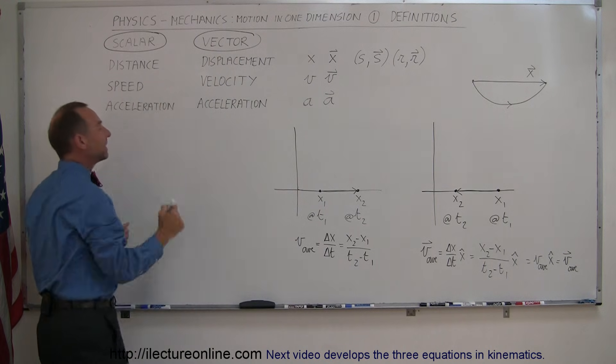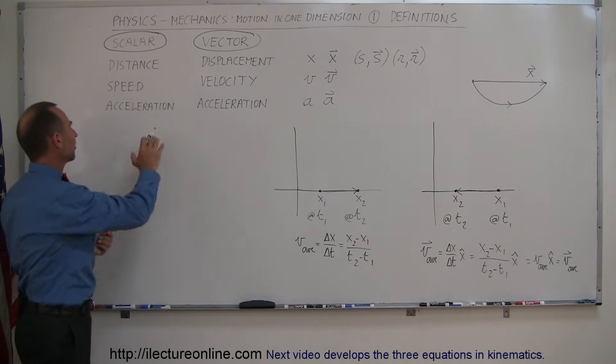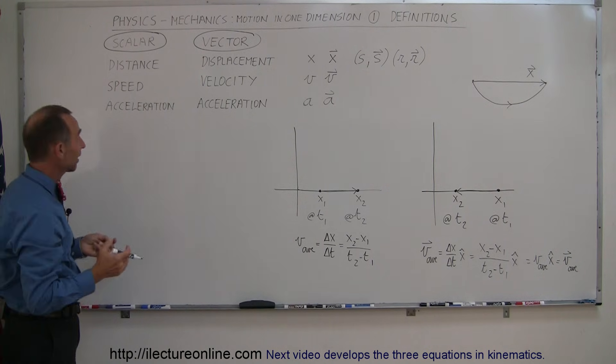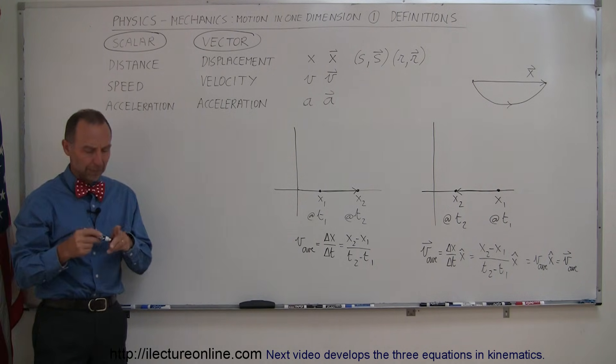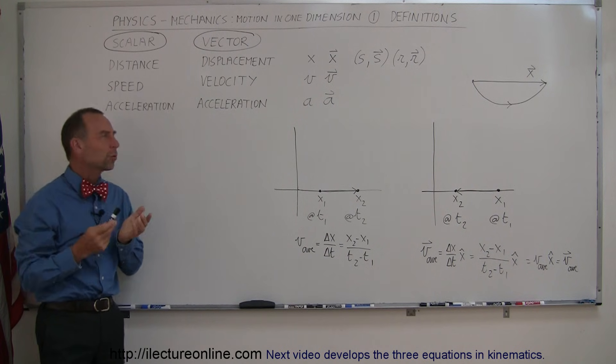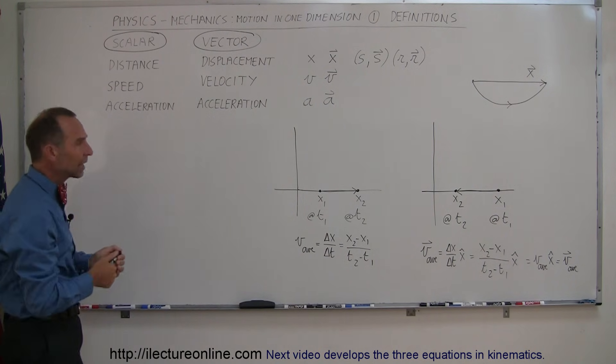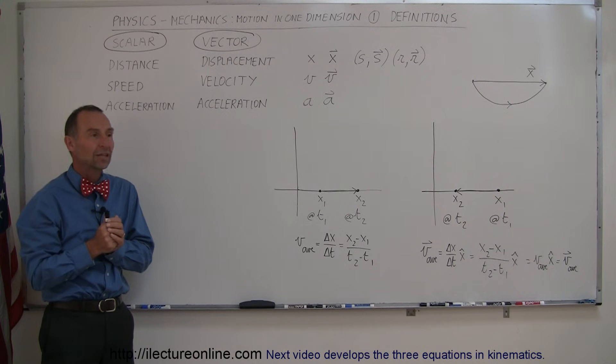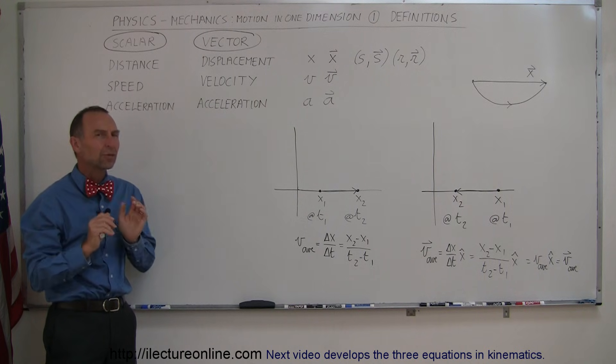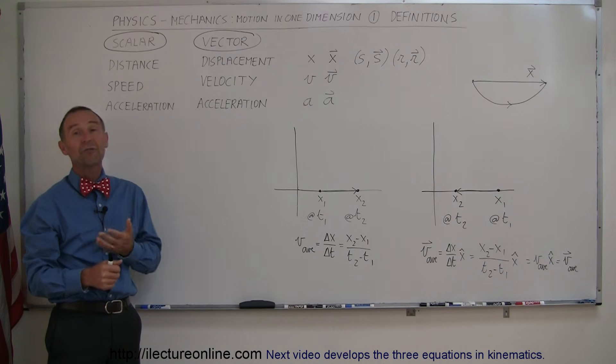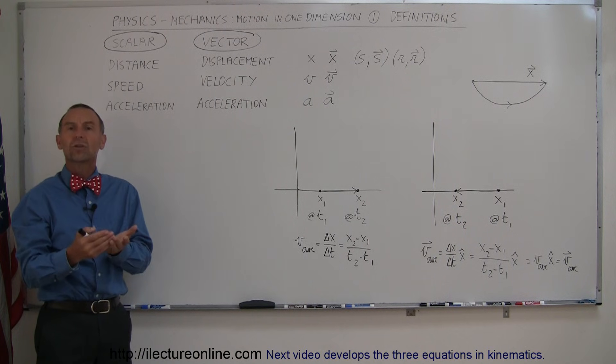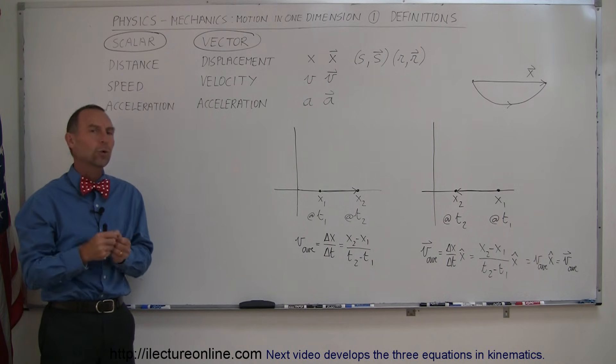Instead of saying distance, we say displacement. Instead of saying speed, we say velocity. And acceleration, we say the same thing. Now what is the difference between a vector and a scalar quantity? Well, the scalar quantity is something that just explains the amount, how big, how fast and so forth. It doesn't say anything about direction. So when we talk about how far somebody's walked, we can say somebody's walked five miles, but we don't know what direction. So that's called a scalar quantity.